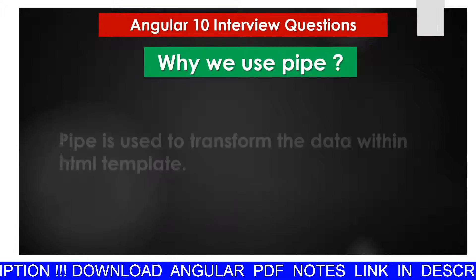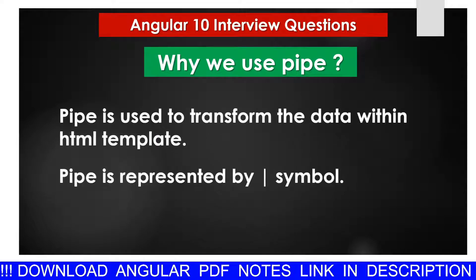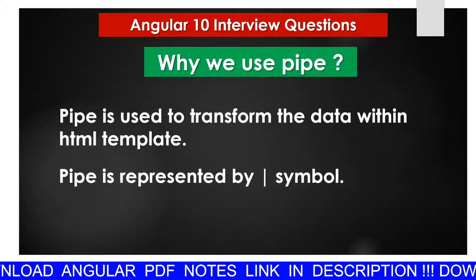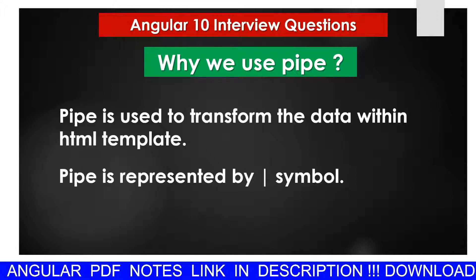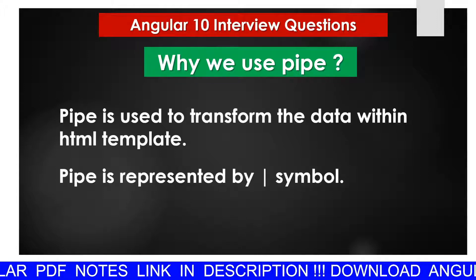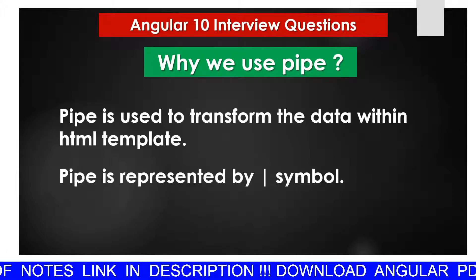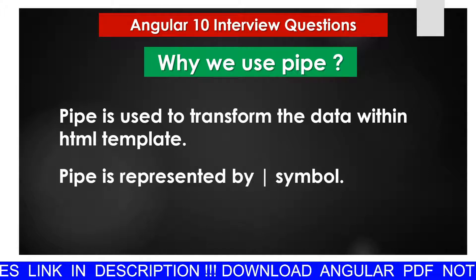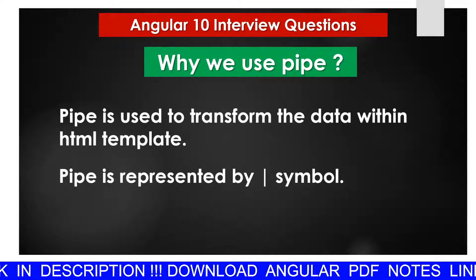The first question: why do we use pipe? Pipe is used to transform data within an HTML template. Pipe is represented by the pipe symbol '|'.